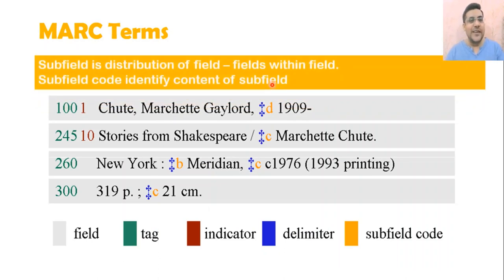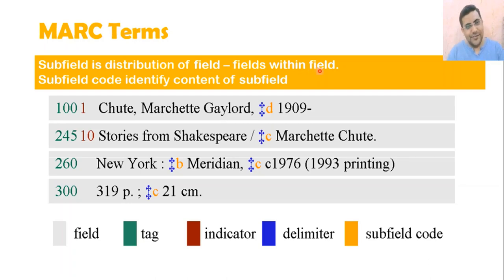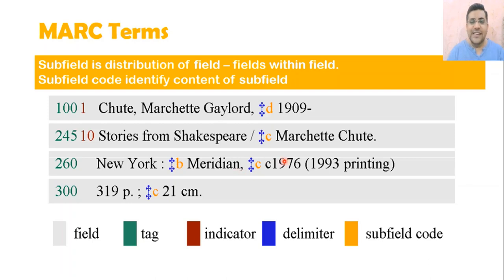The subfield is actually a distribution of a field. A field is distributed into subfields, and the subfield code identifies the content of that subfield. So if we write a particular subfield code, it will indicate what that information represents. Here is the basic MARC structure.